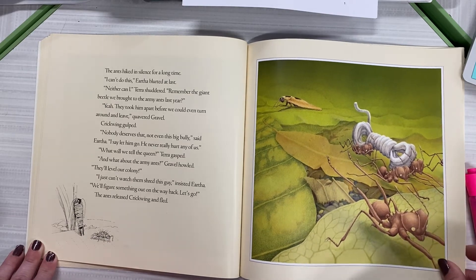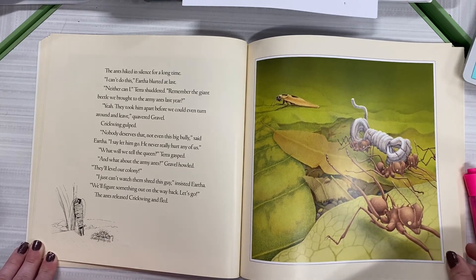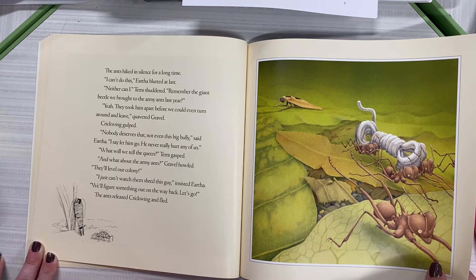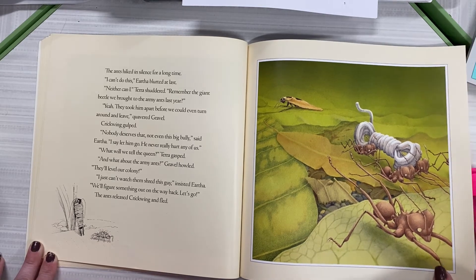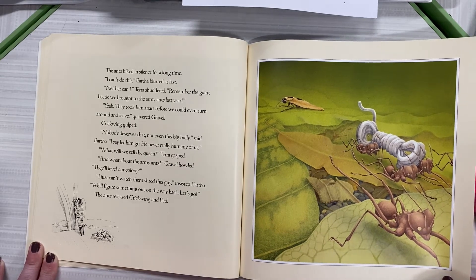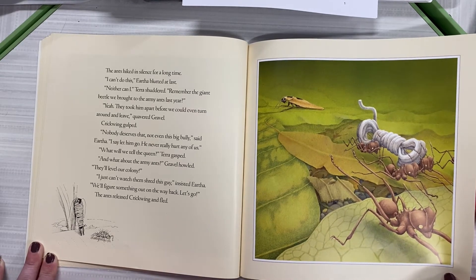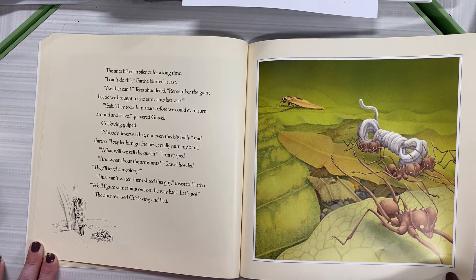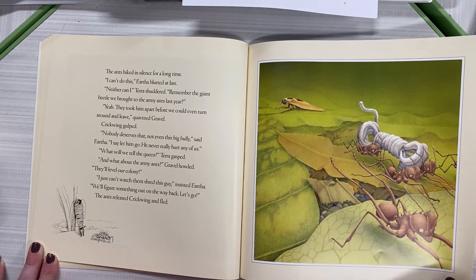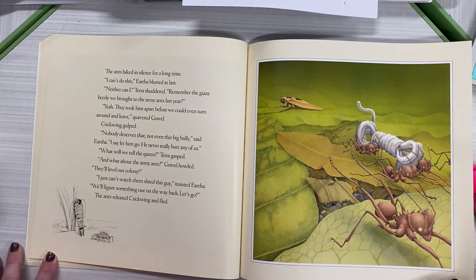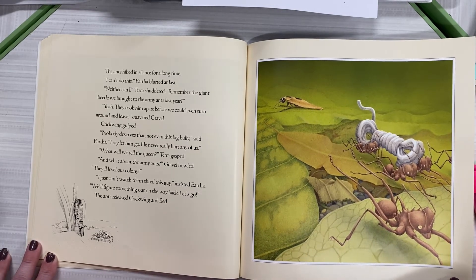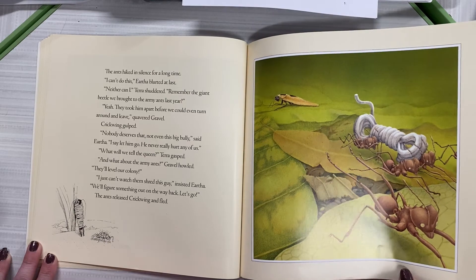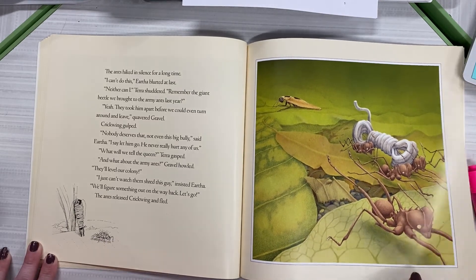That big oaf showed up just in time for the annual peace offerings to the army ants, crowed the queen. There's no way they'll attack us if we hand this hefty no-gooder over to them. Dress him up like a fat turkey he is and ship him out. The leaf cutter bound Crickwing, hauled him back through the dim tunnels and carried him up into the forest. The ants hiked in silence for a long time. I can't do this, Eartha blurted at last. Neither can I, Tara shuddered. Remember the giant beetle we brought to the army ants last year? Yeah, they took him apart before we could even turn around and leave, quavered Gravel. Crickwing gulped. Nobody deserves that. Not even this big bully, said Eartha. I say let him go. He never really hurt any of us. What will we tell the queen, Tara gasped? And what about the army ants? Gravel howled. They'll leave our colony. I just can't watch them shred this guy, insisted Eartha. We'll figure something out on the way back. Let's go. The ants released Crickwing and fled.